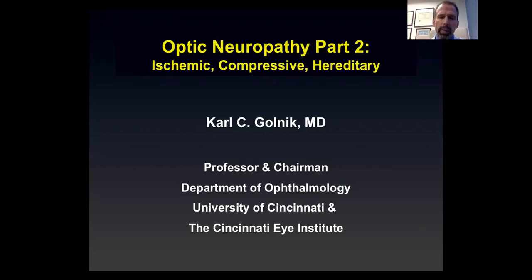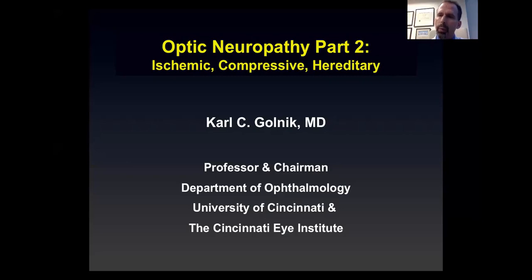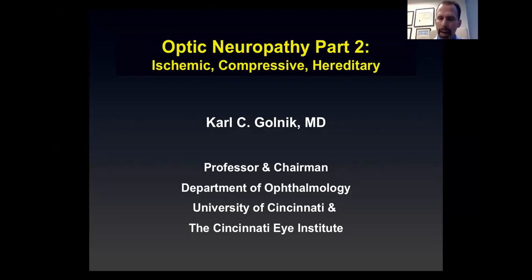There were some questions regarding specific patients. The best way to deal with those is to use the CyberSite consultation feature — anybody can go to CyberSite, post cases, and have them directed to the relevant subspecialists. Today we're going to talk about part two of optic neuropathy: more types of optic nerve problems — ischemic, compressive, and hereditary, and I might throw in a couple of toxic and nutritional as well.